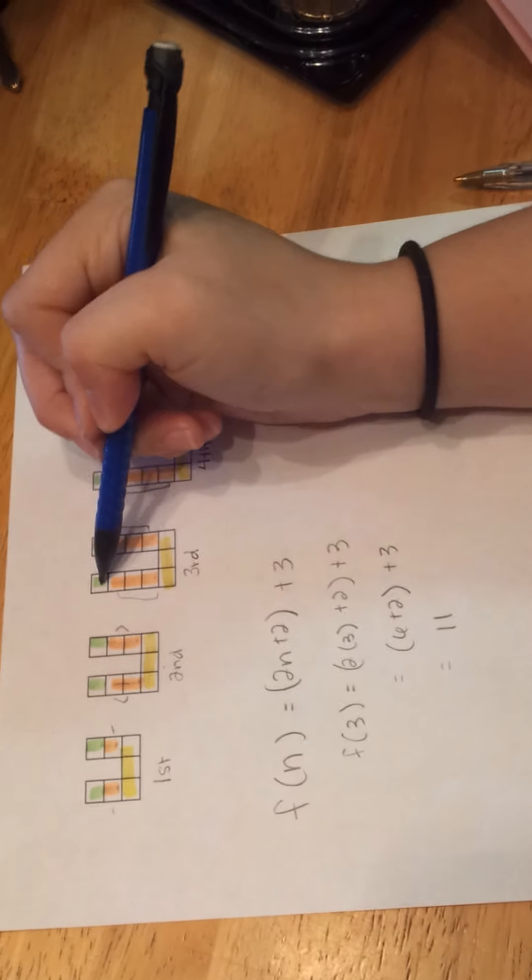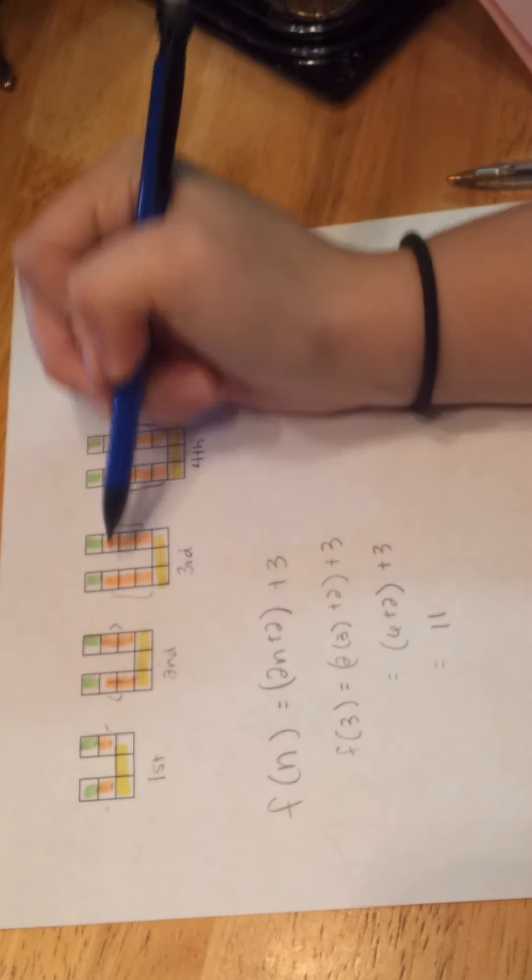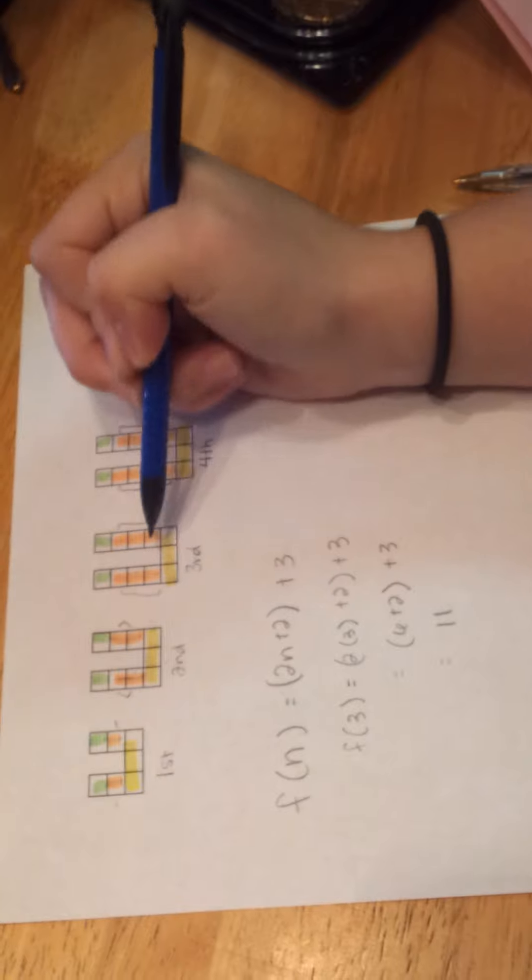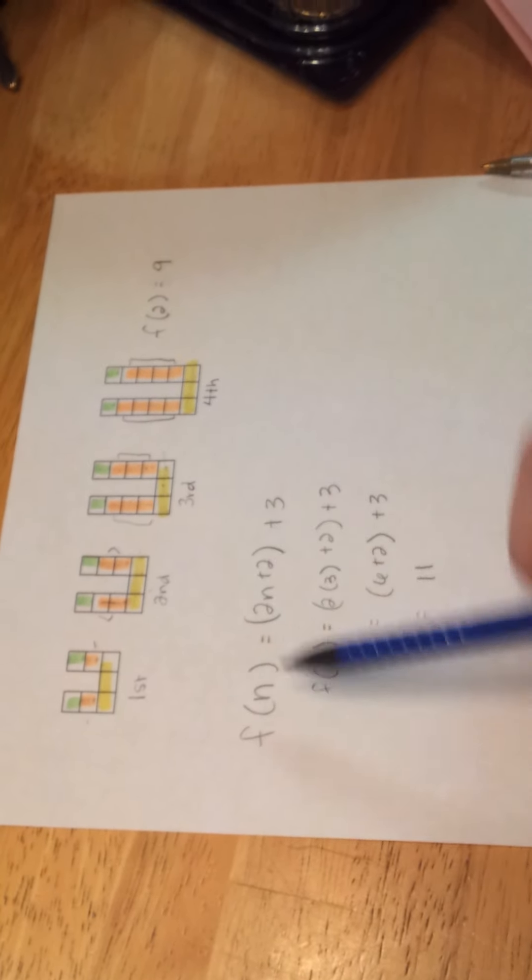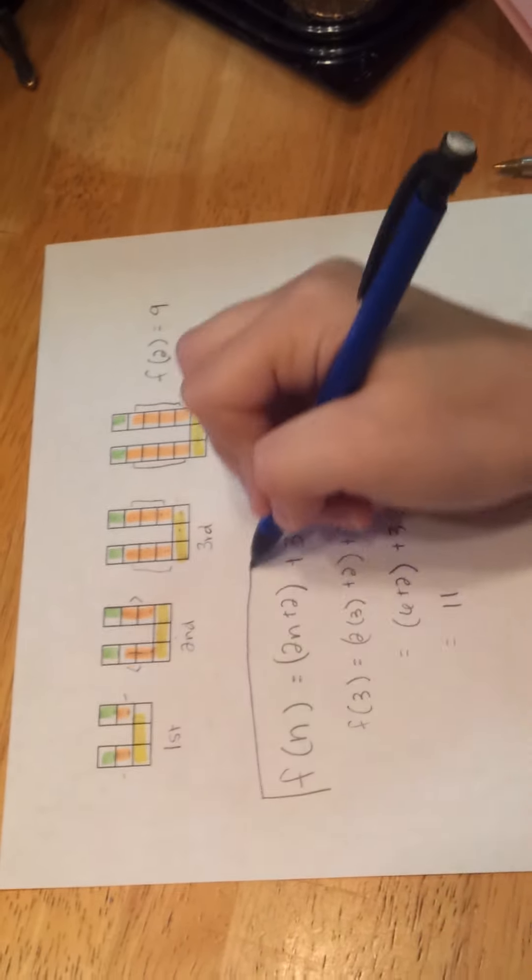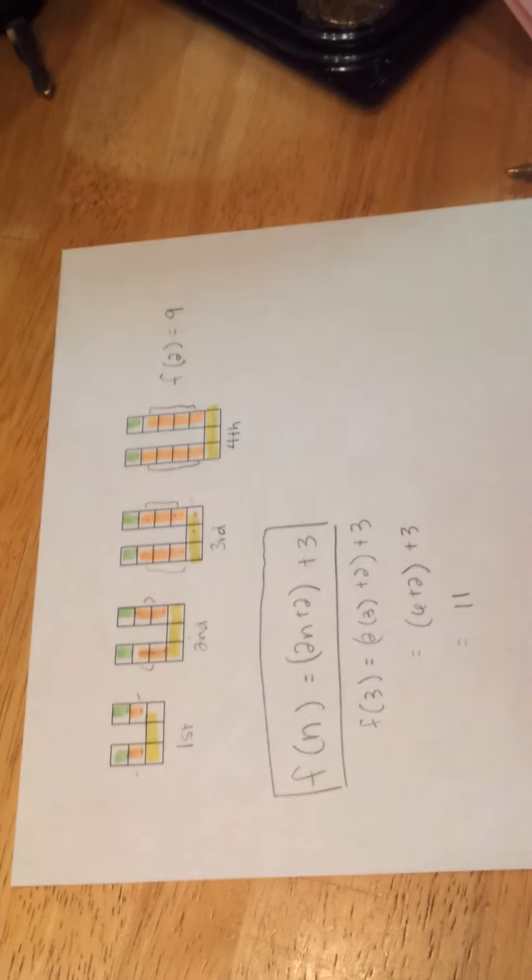which when you combine is 11. And we know that there are 1, 2, 3, 4, 5, 6, 7, 8, 9, 10, 11 squares. So this function can work with n number of squares.